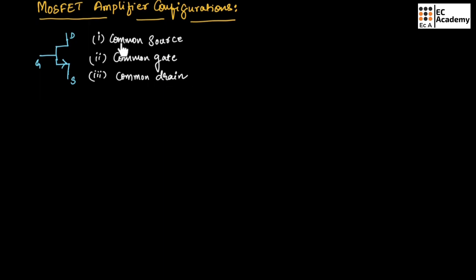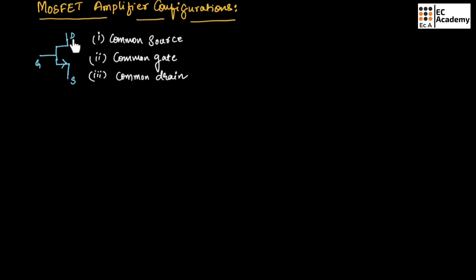In common source configuration, the source terminal will be common between input as well as output, and the other two terminals will be the input terminal as well as the output terminal.